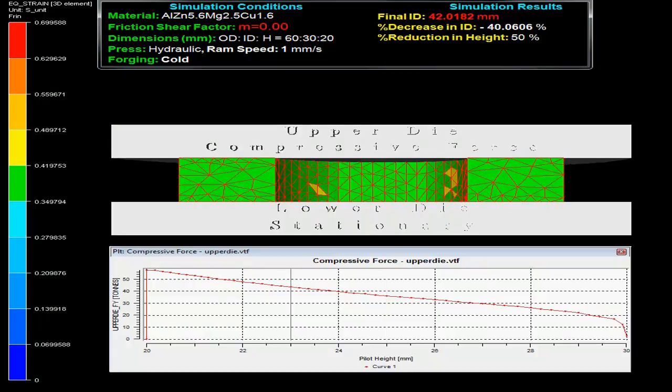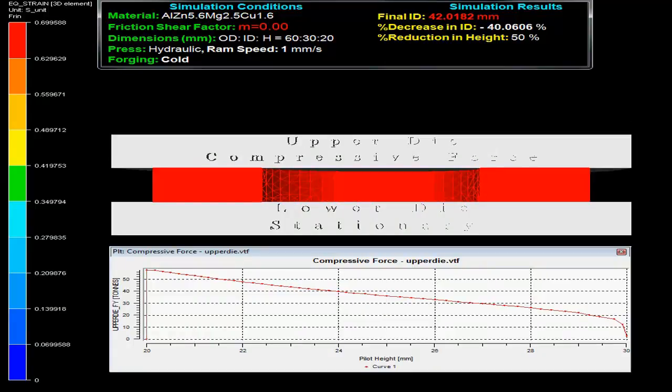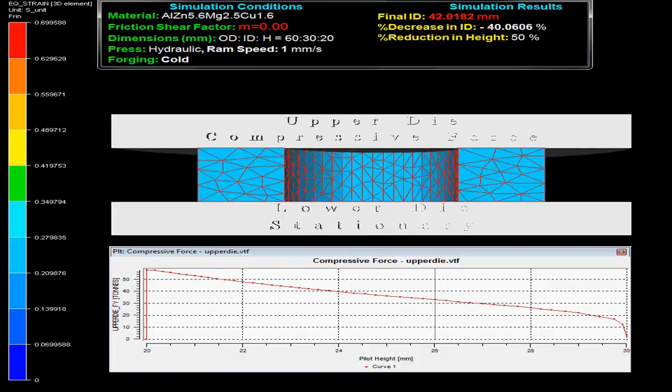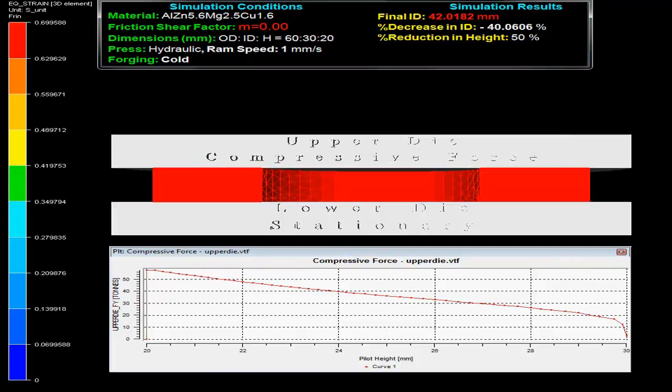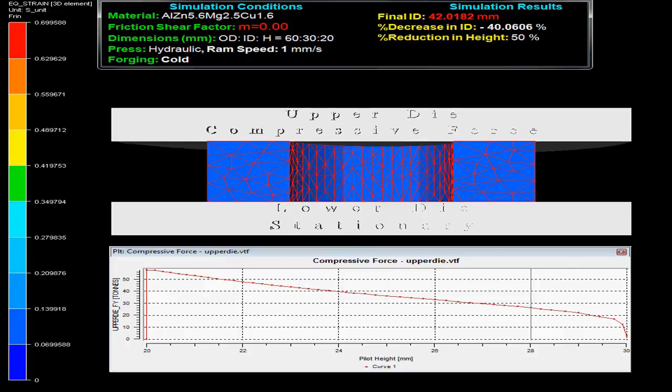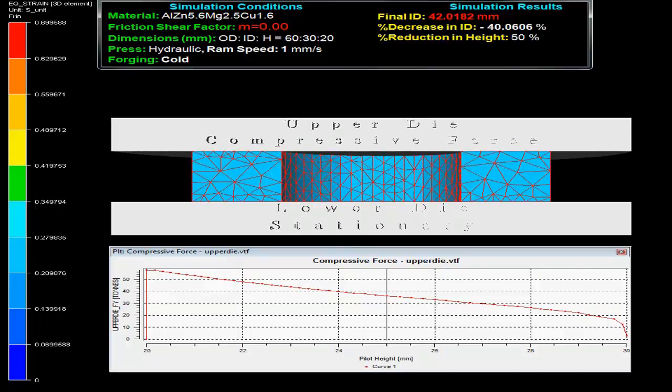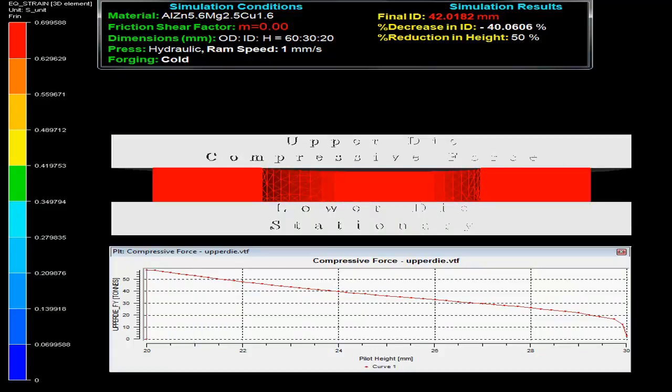On the top left corner of the video, one can observe the simulation conditions. The specimen material is aluminum 6062-0C11 6 with friction shear factor M as 0, and initial outer diameter to inner diameter to height ratio as 60:30:20.